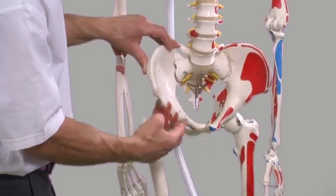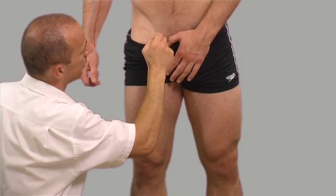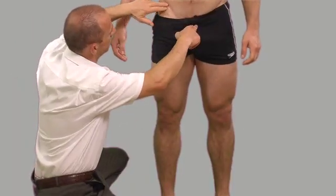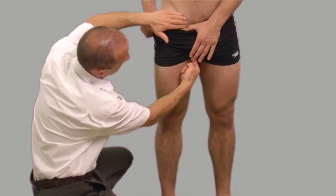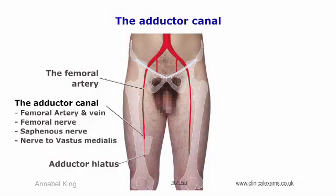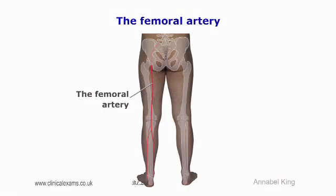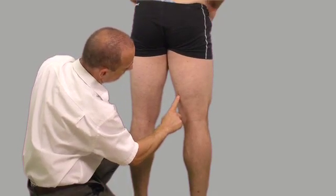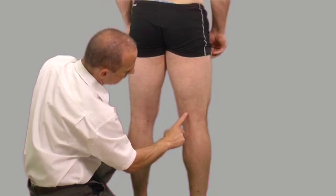The femoral artery can be palpated with ease just inferior to the inguinal ligament, halfway between the anterior superior iliac spine and symphysis pubis. The femoral artery then travels deep within the muscles of the thigh, then medially and posteriorly as it approaches the knee joint. At the distal one-third of the thigh it travels through the adductor canal, together with the femoral vein, femoral nerve, saphenous nerve, and the nerve to vastus medialis. The femoral artery emerges through the opening of the adductor magnus to travel into the popliteal fossa.